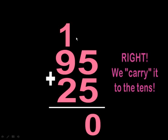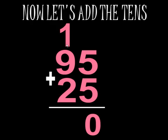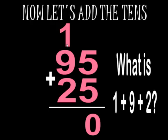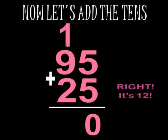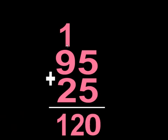So we're going to carry that one group of 10 to the tens column. Now we're ready to add the tens column. What is 1 plus 9 plus 2? Using your math strategies, I know that 1 plus 9 gives me 10, so all I have to do is add 10 plus 2, which gives me 12. That makes the answer 120.